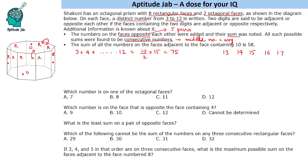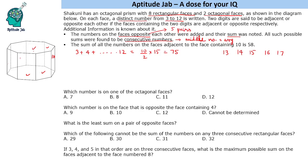The sum of all numbers on the faces adjacent to the face containing 10 is 58. Suppose 10 is on one of the rectangular faces — then it has only 4 adjacent faces, and their sum cannot be 58 even taking the largest possible values. Therefore, 10 must be present on one of the octagonal faces, which has 8 adjacent faces, making the sum of 58 possible.